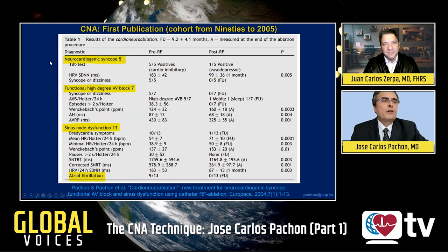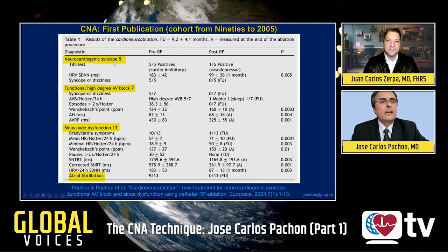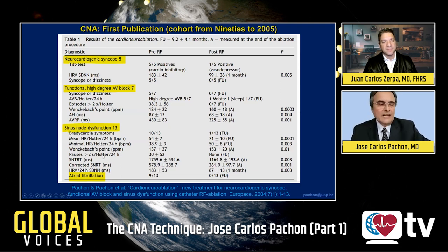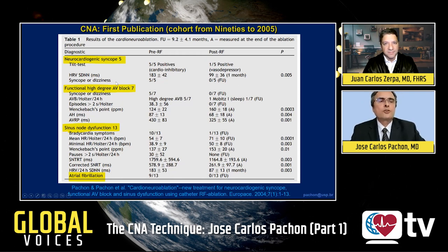At that time, we found very interesting and good results treating five patients with neurocardiogenic syncope — specifically cardioinhibitory neurocardiogenic syncope — seven cases with functional high-degree AV block, 13 patients with sinus node dysfunction, and nine patients with atrial fibrillation. These are the main indications: neurocardiogenic syncope, functional high-degree AV block, sinus node dysfunction, and atrial fibrillation.